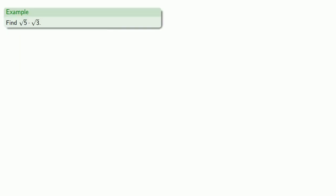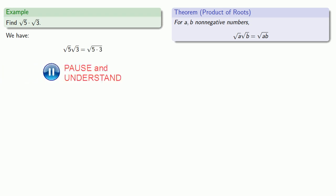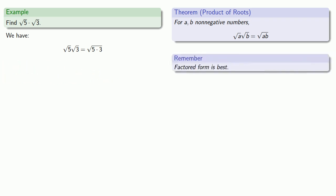So let's find square root of 5 times square root of 3. Our theorem says that the product of the square roots is the square root of the product. So square root of 5 times square root of 3 is really the square root of 5 times 3. A useful idea to keep in mind: factored form is best. It's most useful to leave this as square root of 5 times 3 if we're going to do anything further. But in this case, we can multiply out 5 times 3 to get our final answer, square root of 15.